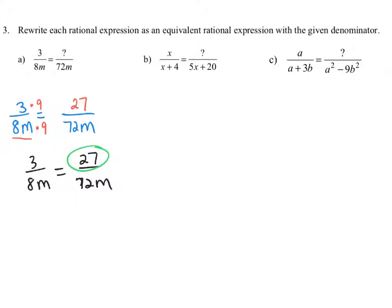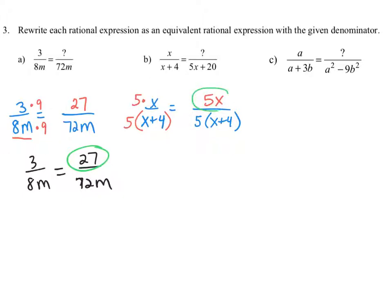In example B, we have x over x plus 4 and we want to find the equivalent rational expression with denominator 5x plus 20. Since 5x plus 20 factors as 5 times x plus 4, we can see that the original denominator x plus 4 was multiplied by 5. So we also multiply the numerator by 5, giving us 5x as the missing numerator. Therefore, x over x plus 4 is equivalent to 5x over 5x plus 20.